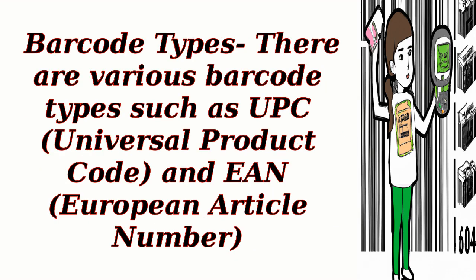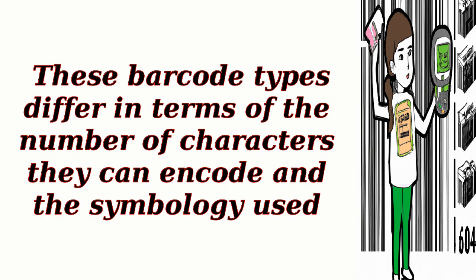Barcode types: there are various barcode types such as UPC (Universal Product Code) and EAN (European Article Number). These barcode types differ in terms of the number of characters they can encode and the symbology used.